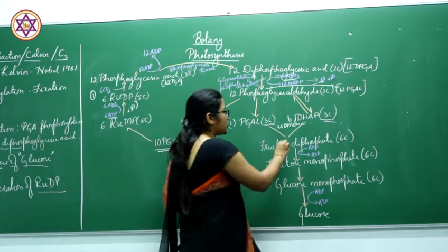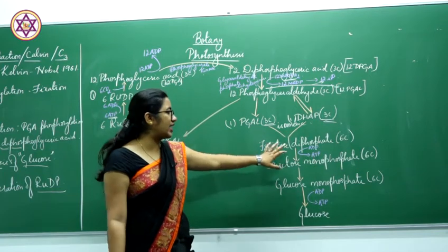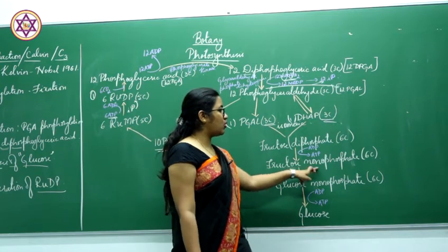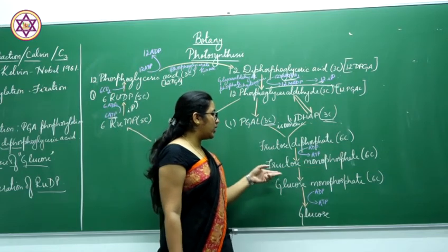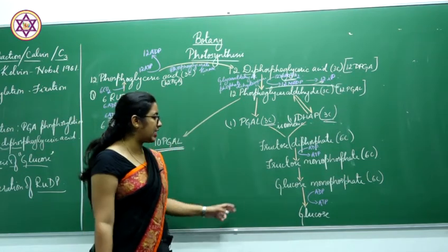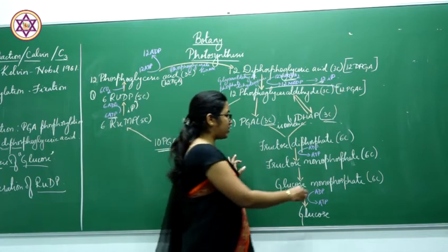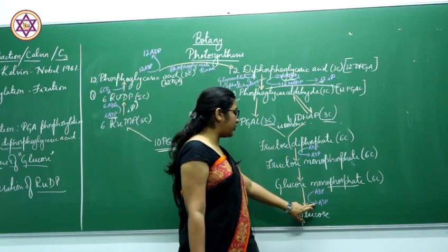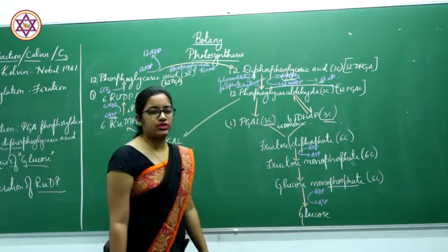The diphosphate is then removed: ADP combines with one inorganic phosphate to form ATP, producing fructose monophosphate. This fructose monophosphate isomerizes into glucose monophosphate with the help of an enzyme. Glucose monophosphate releases a single phosphate, forming ATP and producing glucose.